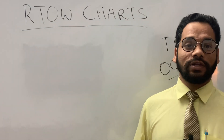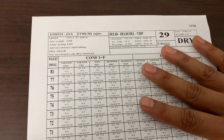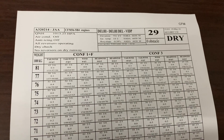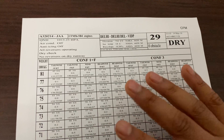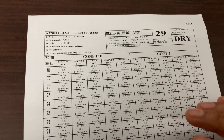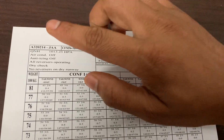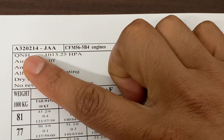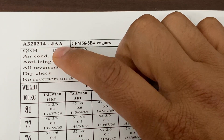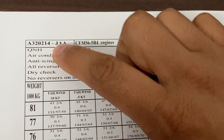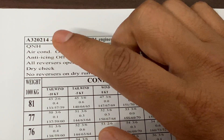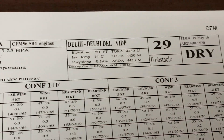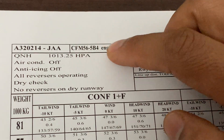This is the RTOW chart — RTOW stands for Regulatory Takeoff Weight — used to make takeoff performance calculations. Let's see what is given on this chart. At the top right corner you can see the aircraft model: AT20-214, which is the aircraft specification. This chart is specific not just to the aircraft but also to the engines, airport, and other things.